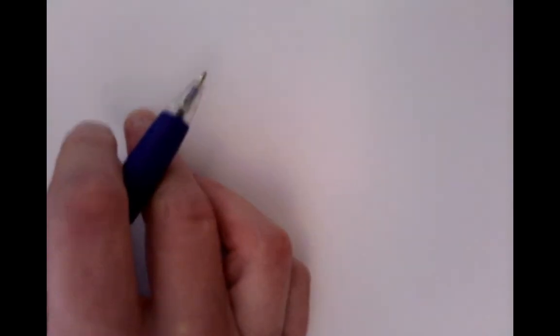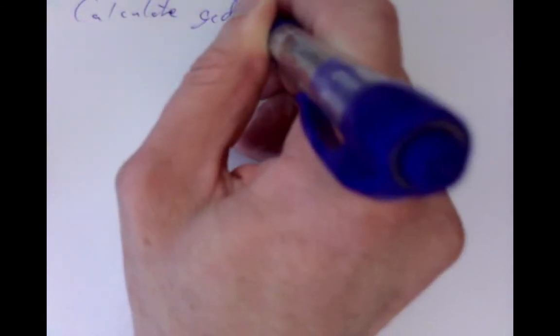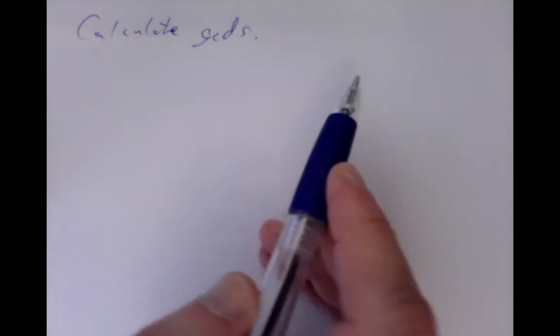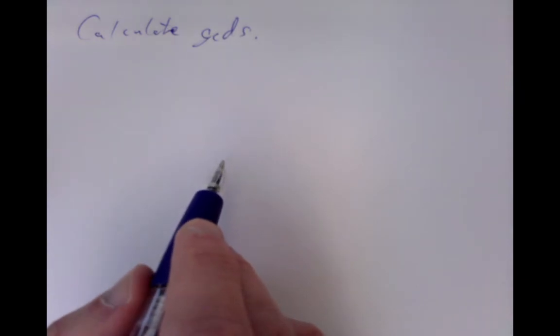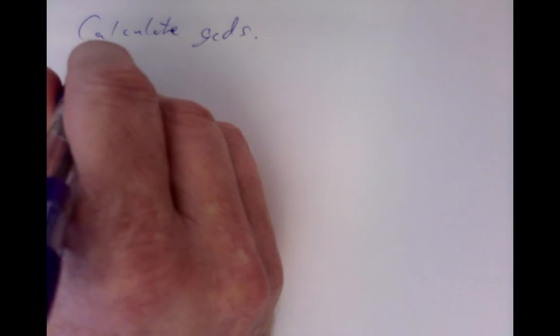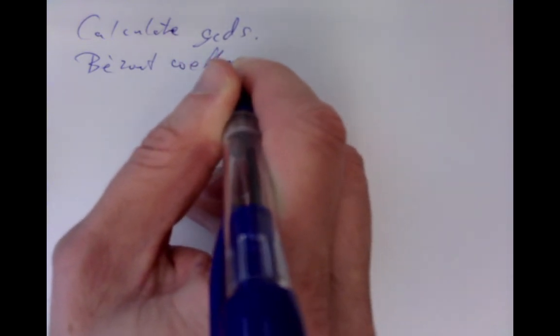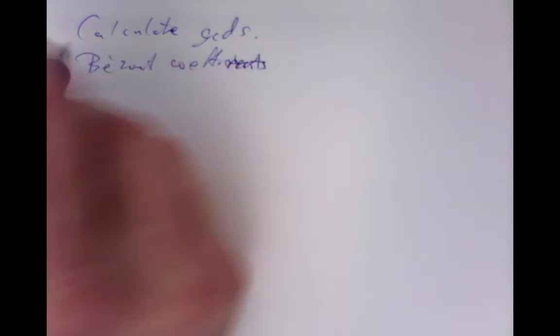Once we restrict to prime moduli, we can calculate GCDs of polynomials using exactly the same formulas as for integers: take quotients and remainders to reduce, just as the Euclidean algorithm. We can also calculate Bézout coefficients for polynomials using exactly the same trick. Let's see how to do it in an example, since Bézout coefficient calculation automatically gives you GCDs.